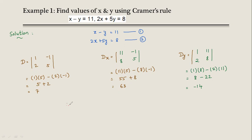Therefore x is equal to Dx upon D, which is 63 divided by 7, equal to 9. Next, y is equal to Dy upon D.